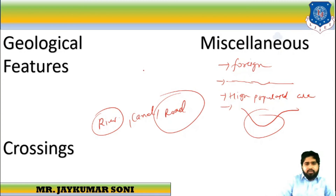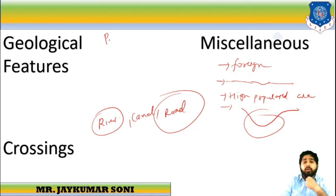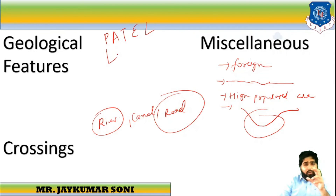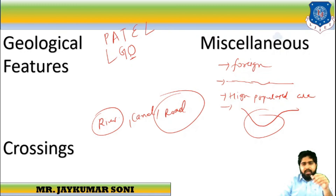So these are the factors affecting road alignment: P — Proper Drainage, A — Availability of Construction Material, T — Traffic, E — Economic Factor, L — Land Acquisition, L — Low Grade and Easy Curves, G — Geological Features, O — Obligatory Points, M — Miscellaneous, C — Crossing.